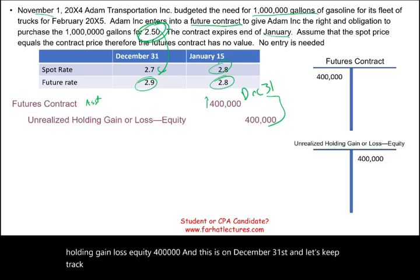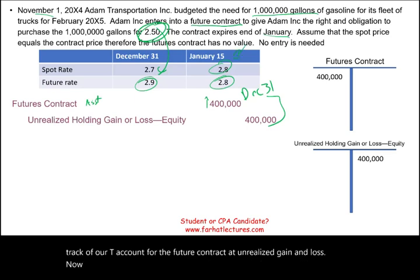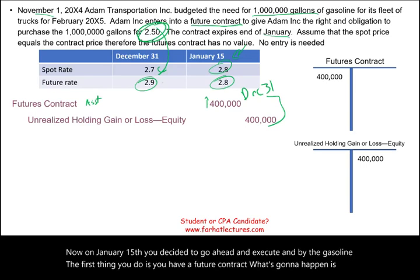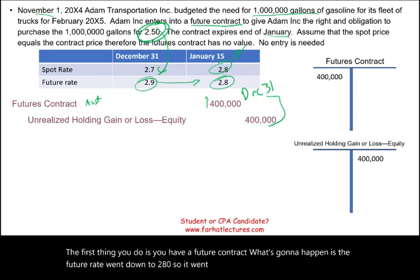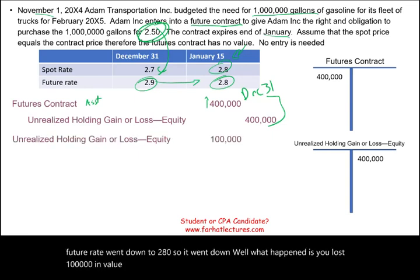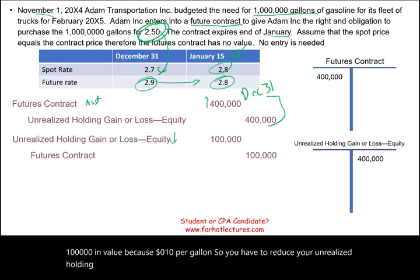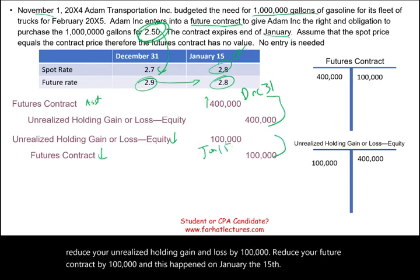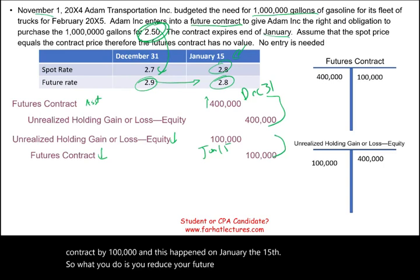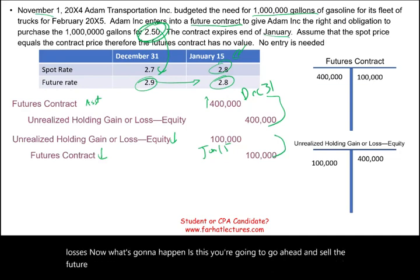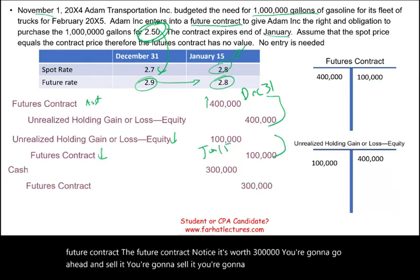On January 15th, the futures rate dropped to $2.80 per gallon — down $0.10 per gallon — so the contract lost $100,000 in value. You reduce Unrealized Holding Gain/Loss by $100,000 and reduce the Futures Contract by $100,000. Then you sell the futures contract: its net remaining value is $300,000, so you debit Cash $300,000 and credit Futures Contract $300,000, closing out the futures position.